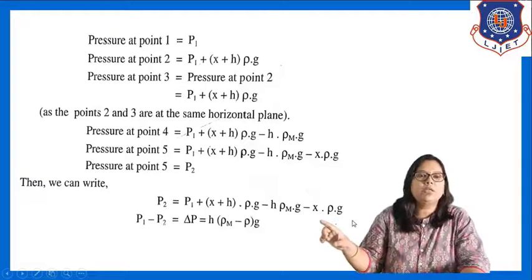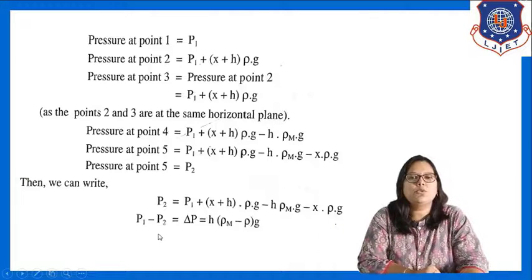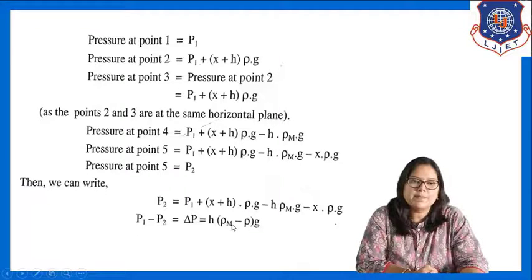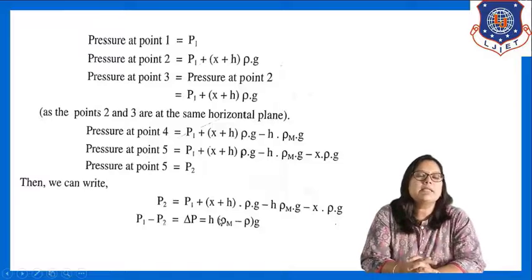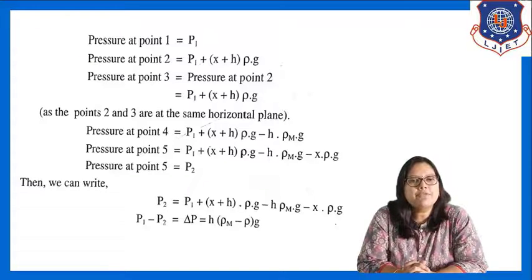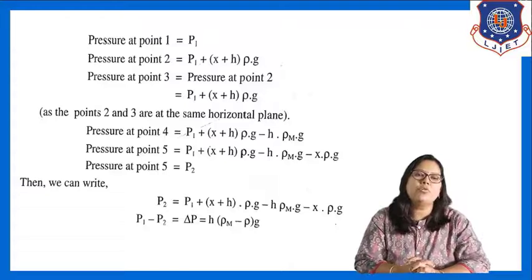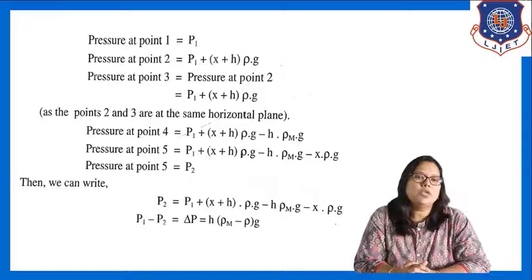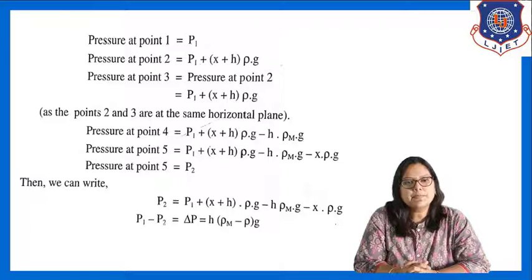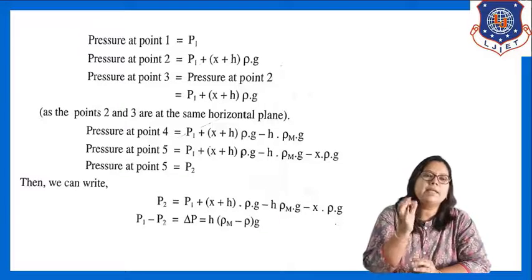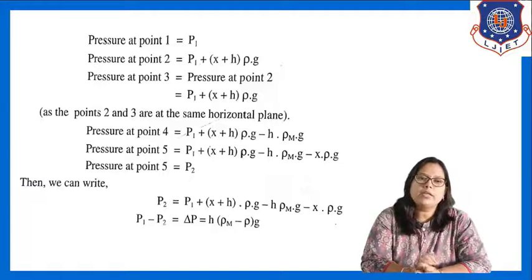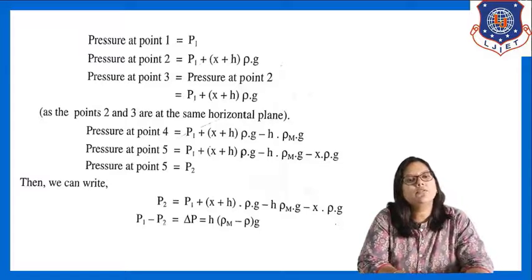Simplifying this whole equation, we get P1 − P2 = ΔP = h·(rho_m − rho)·g. This is the basic equation used to calculate pressure difference in the case of a U-tube manometer. The U-tube manometer is generally used to measure large pressure differences, and it is the simplest type of manometer.